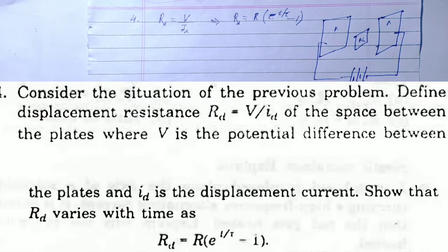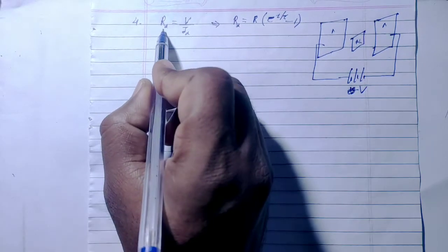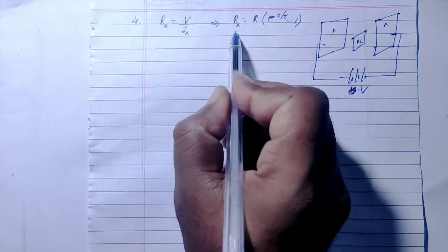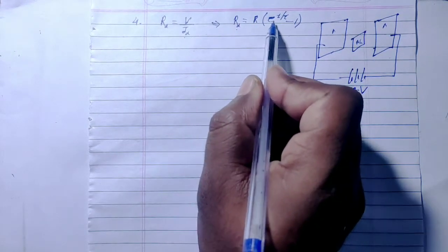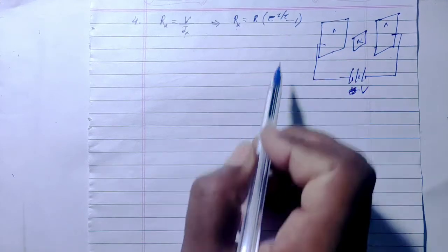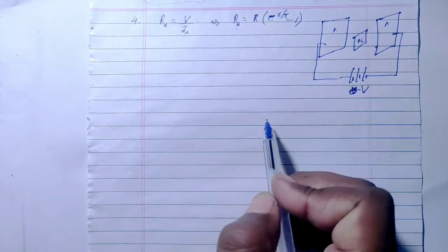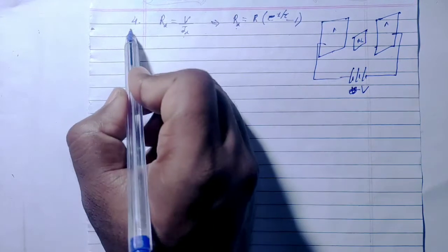We need to show that i_d = R(e^(t/τ) - 1). Given: displacement resistance R_d = V/i_d, and we have to prove that i_d = R(e^(t/τ) - 1). This is a continuation of question 3, where we found the displacement current.